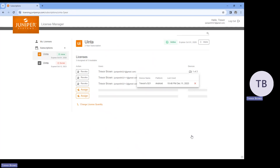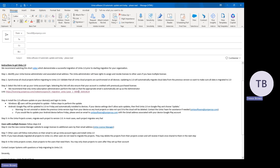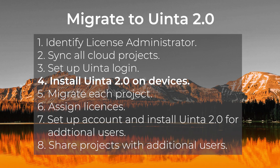This new license manager tool is a good tool to bookmark, especially if you have multiple users within your organization and you want to manage that account. Once you've successfully created your account and logged in to the Uinta license manager, we're going to move to step four: install Uinta version 2.0 on all of your devices. On Windows, you're going to notice a pop-up that prompts you to install the new version. On Android, depending on your settings, you may automatically get updated or be prompted to log in using the credentials you created in step three.